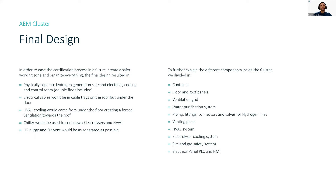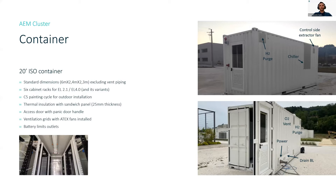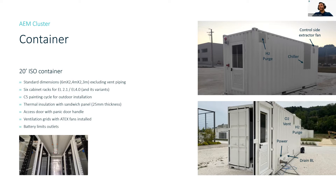The container is a 20-foot ISO container with standard dimensions where we're going to put six cabinets — three on one side and three on the other side. It has a C5 painting, which is for high corrosion environments, and thermal insulation inside the walls. We will have two access doors — one on one side and another opening on the other side, because we divided the zones. The battery limit outlets are still in progress at this time.